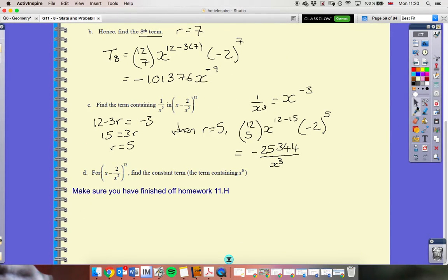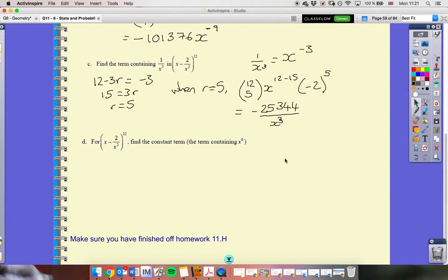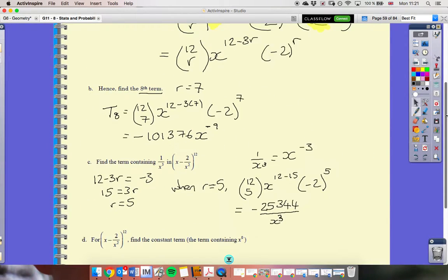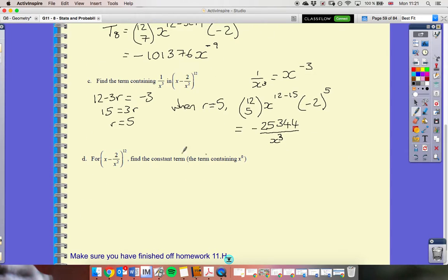We're going to do one more part that's practicing that same thing. So, we've been asked to find the constant term. Constant term is the term where there is no exponent on the x. So, we're after x to have a power of 0. So, let's go back up. I want to find out what value of r I need to make that equal to 0. 12 minus 3r has to equal 0.